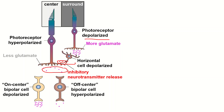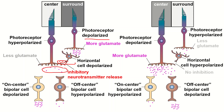The opposite happens when the surround is light. The photoreceptors in the surround will hyperpolarize, causing them to release less glutamate onto the horizontal cell, which will then release less glycine, allowing the central photoreceptor to not be inhibited and release even more glutamate. This is a situation that will cause the highest response in an off center ganglion cell or off center bipolar cell.